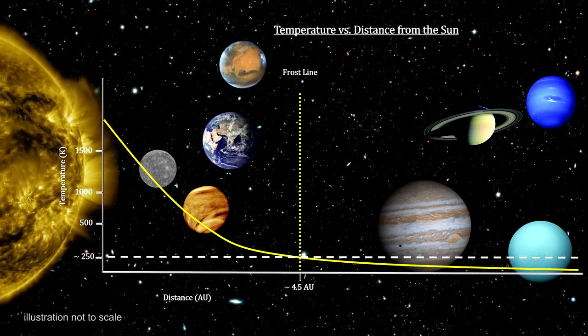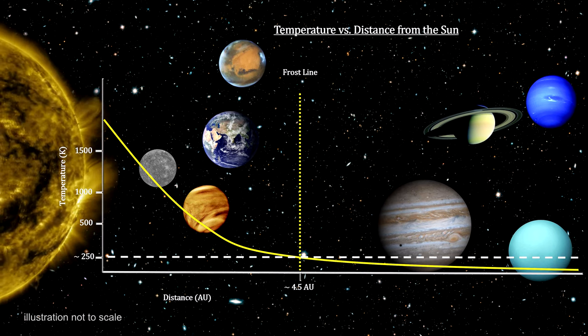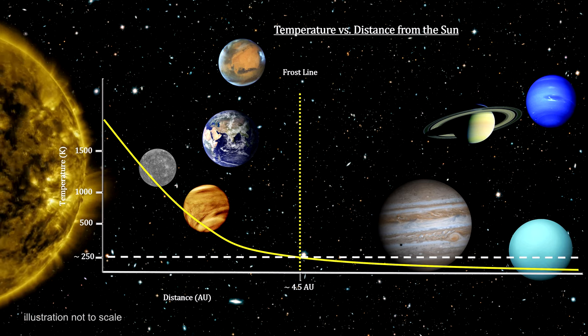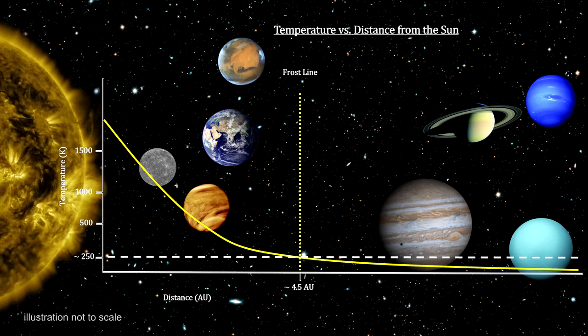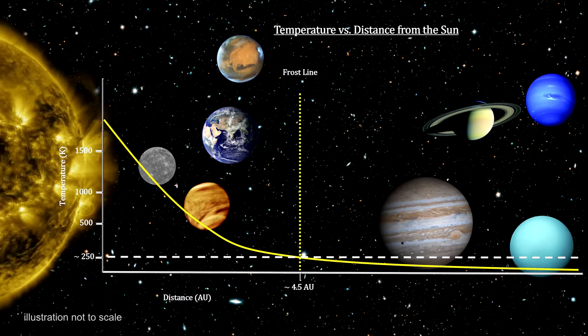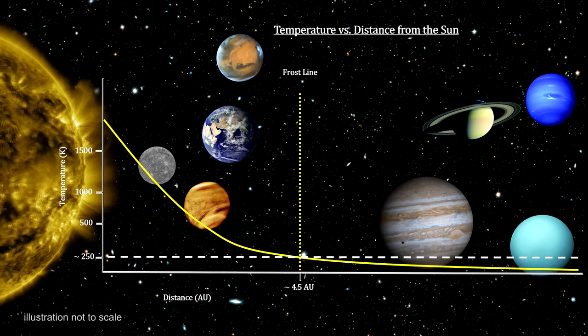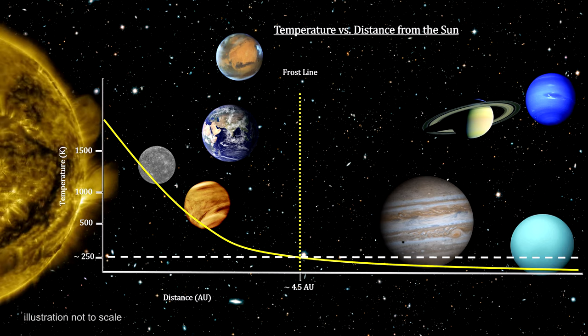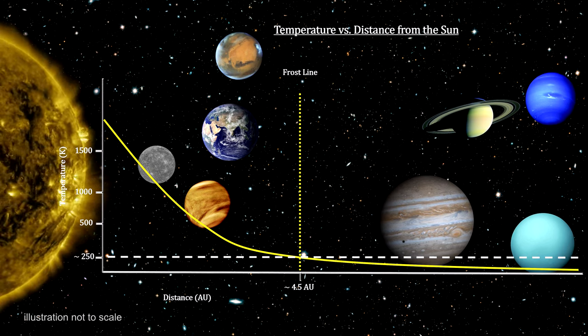The dividing line is called the frost line, or the snow line, and its distance from the star is temperature dependent. It will be located where the temperature falls to around 250 degrees Kelvin, that's minus 10 degrees Fahrenheit. The hotter the star, the further out this line will be.